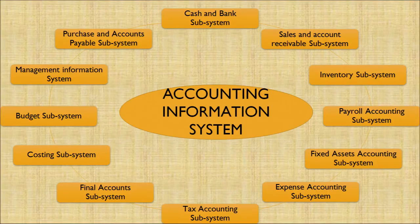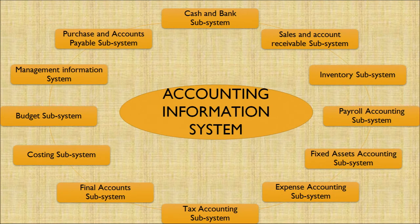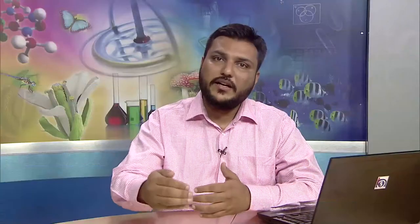There are sub-systems of cash and bank, sales accounts, inventories, payroll accounts, fixed assets accounts, expense accounting, tax accounting, final accounts, costing, budget management, and purchase accounts. These are called sub-ledgers of main ledgers. These sub-ledgers contribute to the main ledgers and how the trial balance is drafted for an organization.